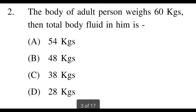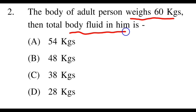Next question: If a person's body weight is 60 kg, what will be the total body fluid? Options are A: 54 kg, B: 48 kg, C: 38 kg, and D: 28 kg. This question uses a formula I explained in a previous video — how to calculate fluid volume when weight is given. The right answer is C. If a person's weight is 60 kg, their fluid volume will be 38 kg.